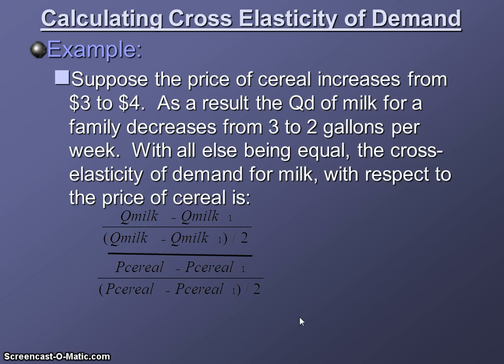For prices it would be three minus four over three plus four divided by two. When we do the math, it turns out to be 0.4 over negative 0.3, which gives us an answer of negative 1.3. So that's great, but what does that mean?